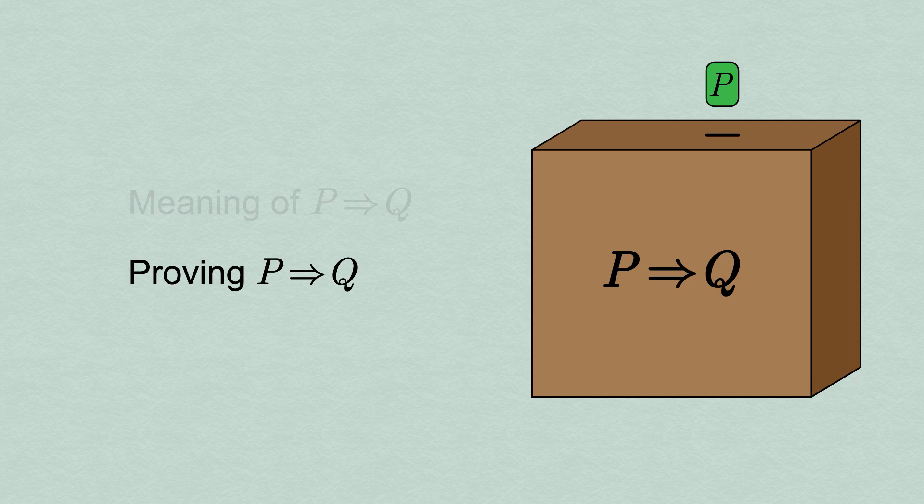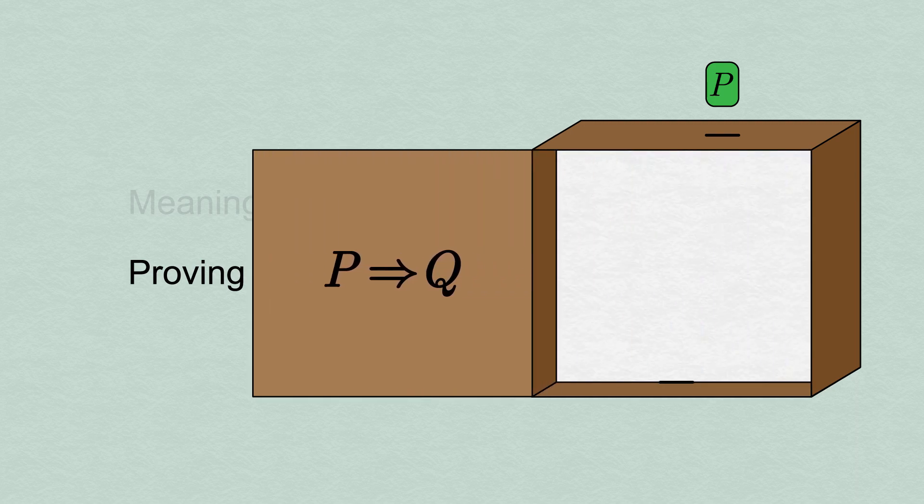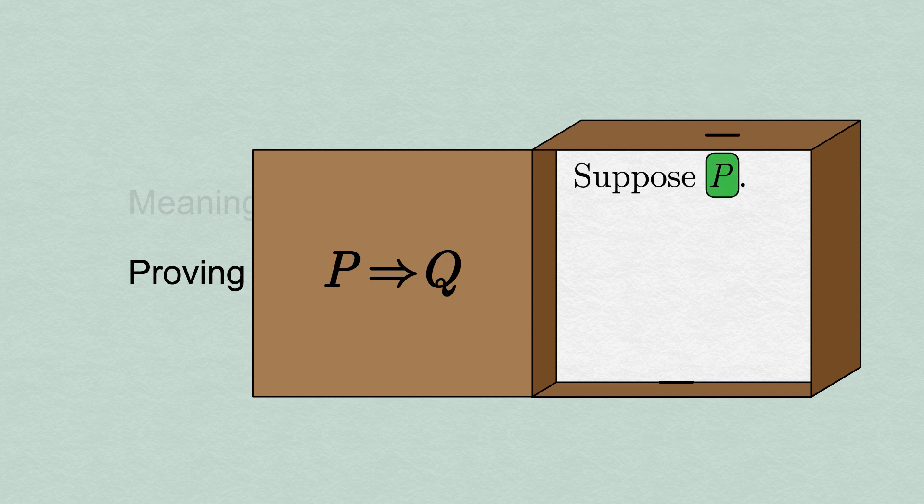Given what we see the box does, let's see what needs to happen inside to achieve this and see how to express it in words. We start a direct proof of P implies Q with the statement: suppose P, meaning that we're assuming that P is true. This is a valid assumption because our statement only asserts what happens when P is true.